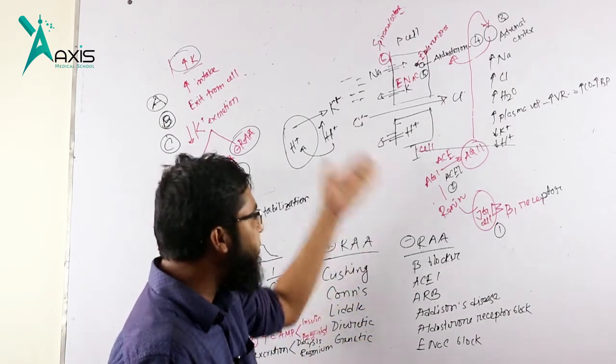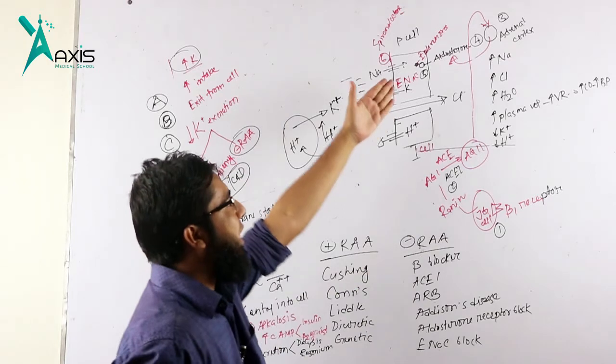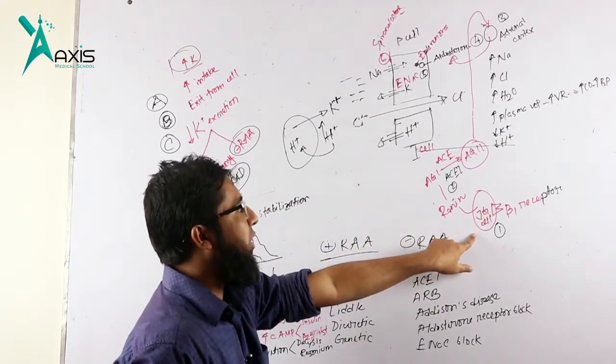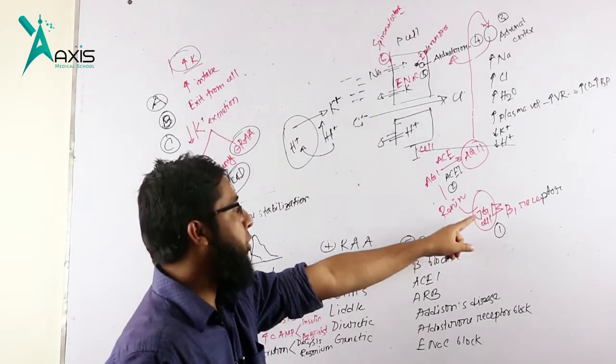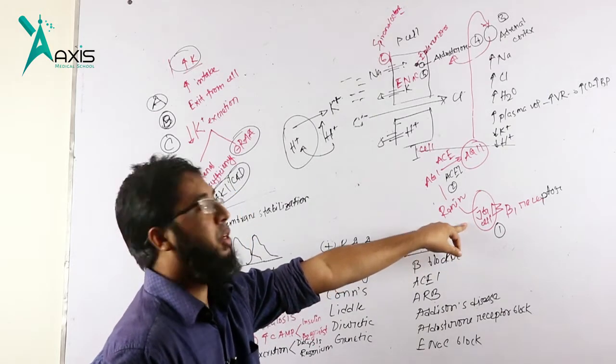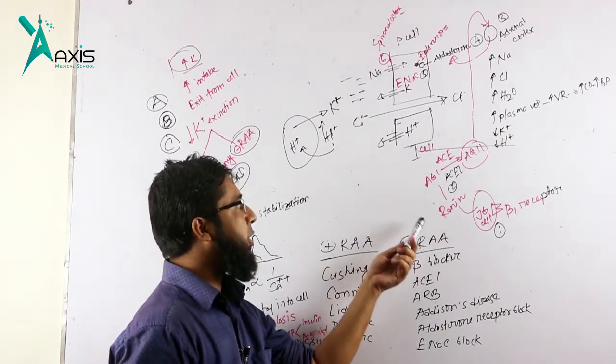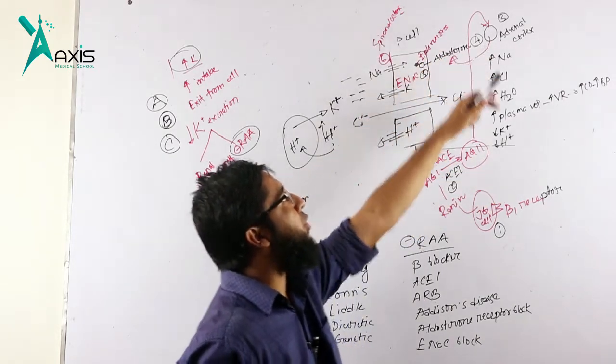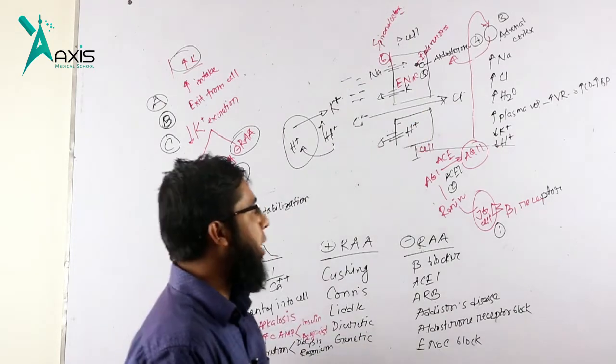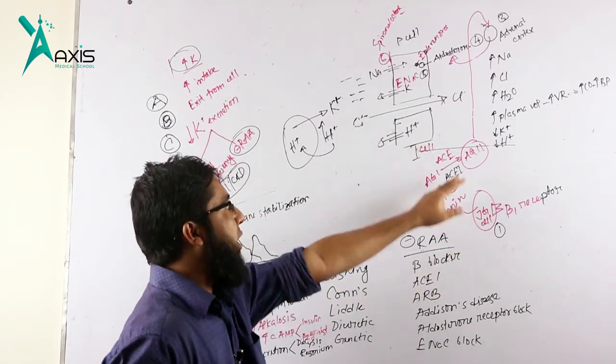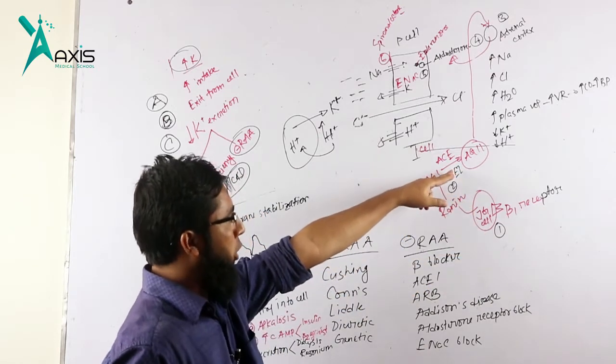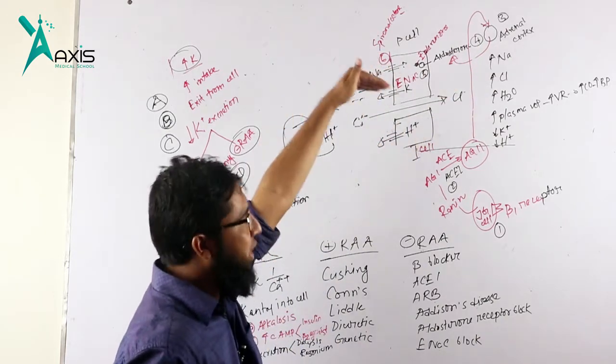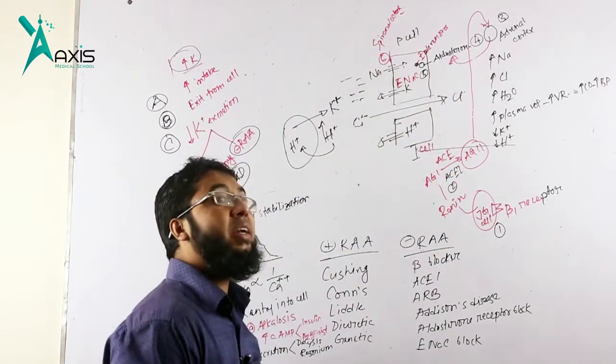Let's see the pathways. Beta-1 receptors in juxtaglomerular cells cause renin secretion. Other stimuli include renal hypoperfusion and ischemic juxtaglomerular cells, which produce renin that converts to angiotensin 1, then angiotensin 2, which stimulates the adrenal cortex to secrete aldosterone. Number 1: beta blockers will block the JG cell. Number 2: ACE inhibitors will block the conversion to angiotensin 2. Number 3: angiotensin 2 receptor blockers will inhibit angiotensin 2 action on the adrenal gland.